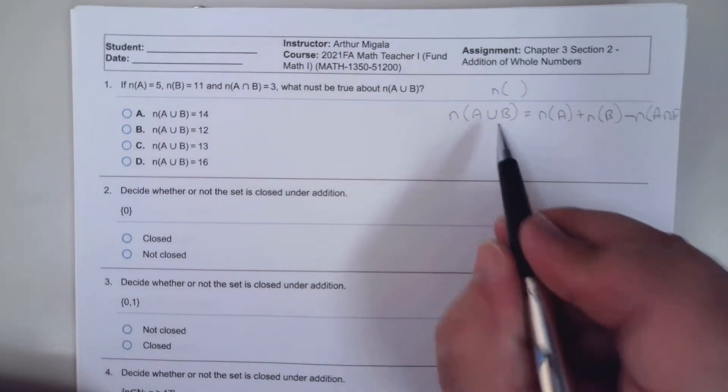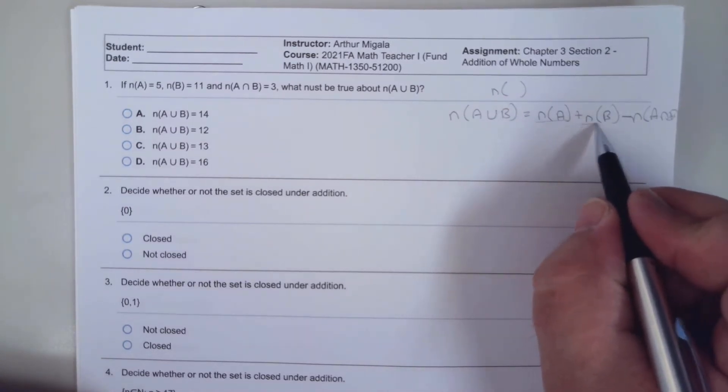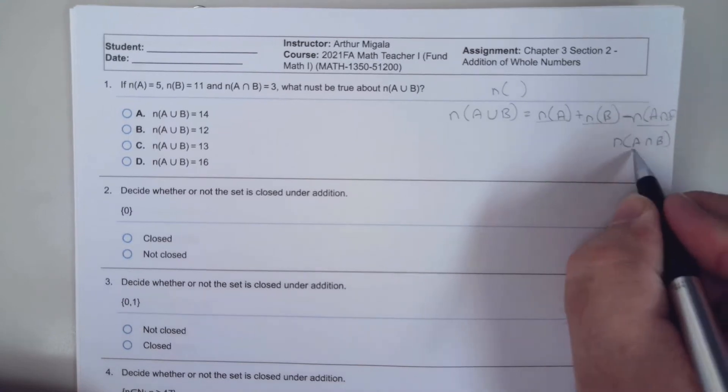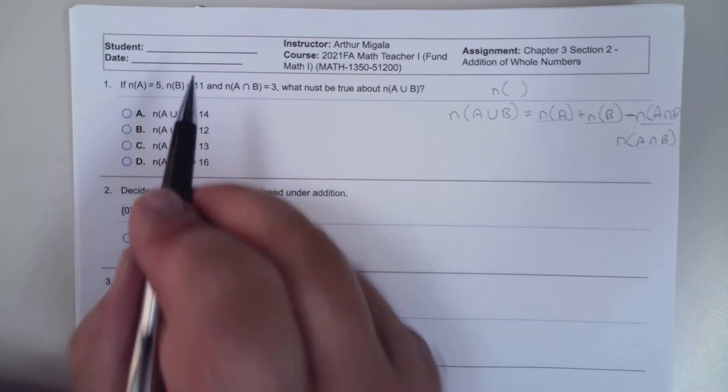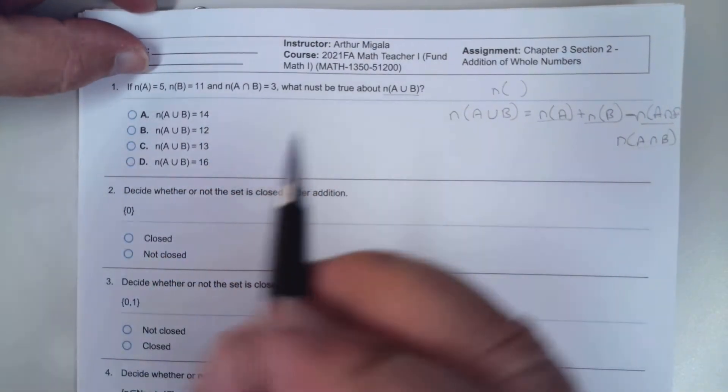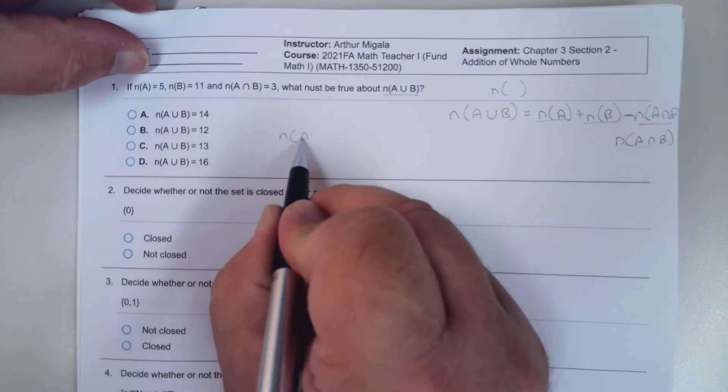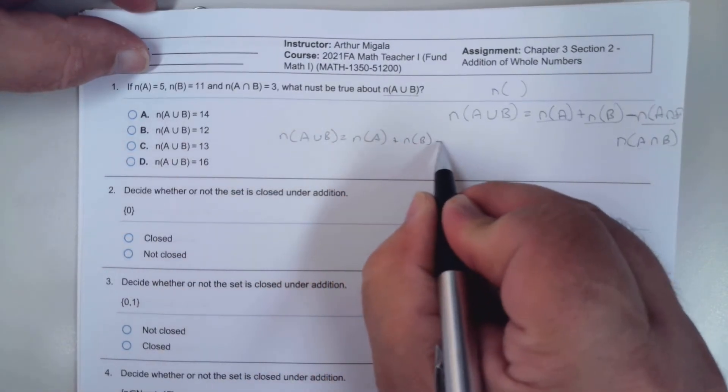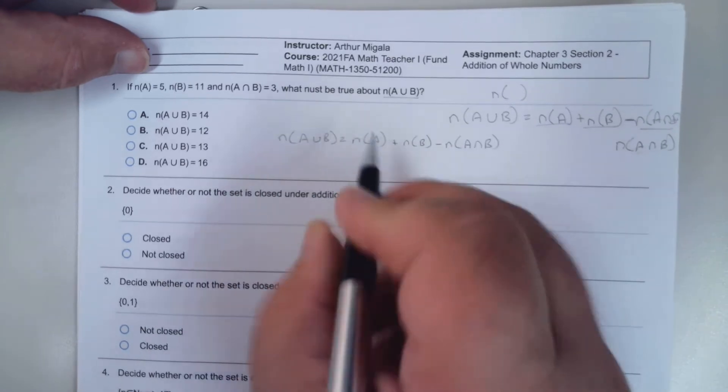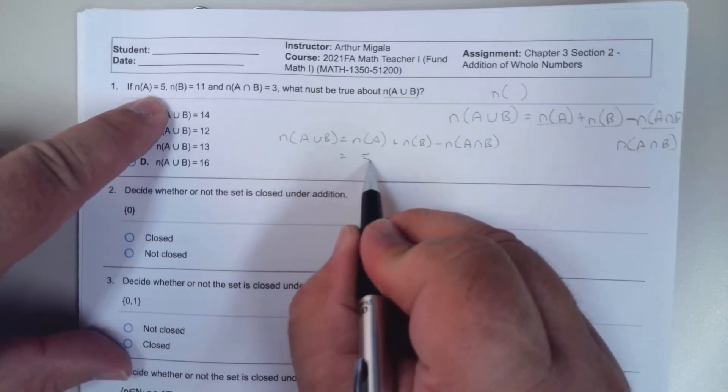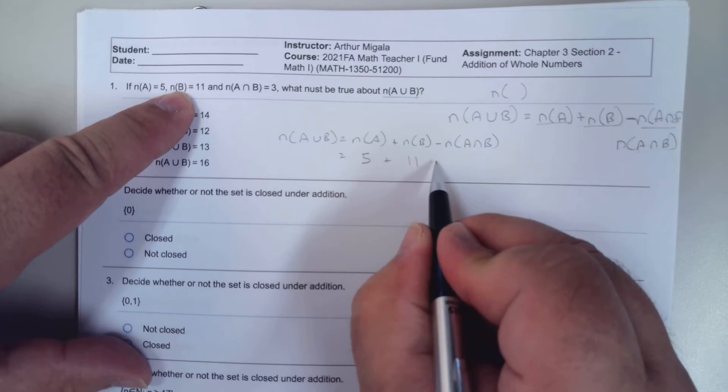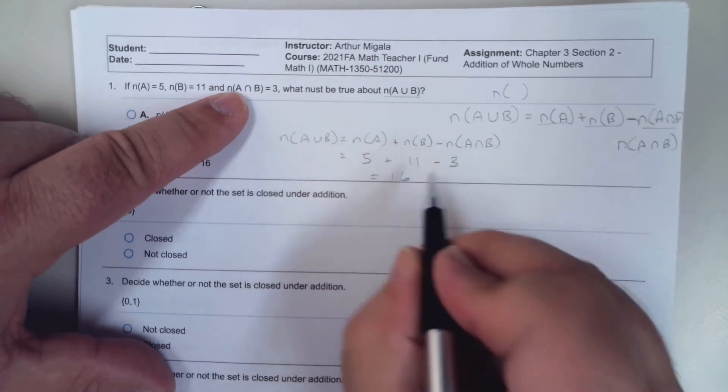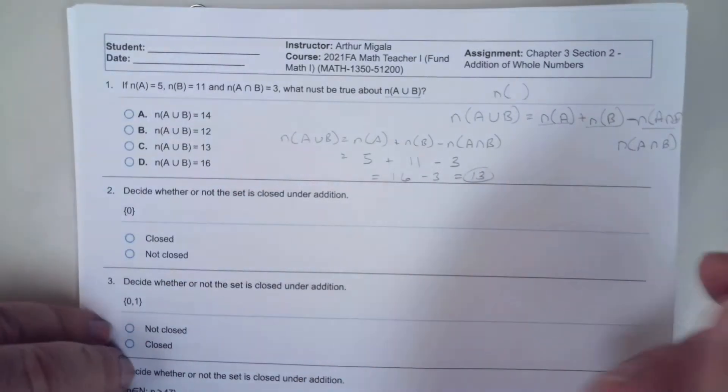So the cardinality of union A and B is how many elements are in A plus how many elements are in B, and you subtract what they have in common. A intersect B is what they have in common. So we have the cardinality of A is 5, cardinality of B is 11, and where they intersect is 3. So 5 plus 11 is 16 minus 3 is 13, so the answer is C.